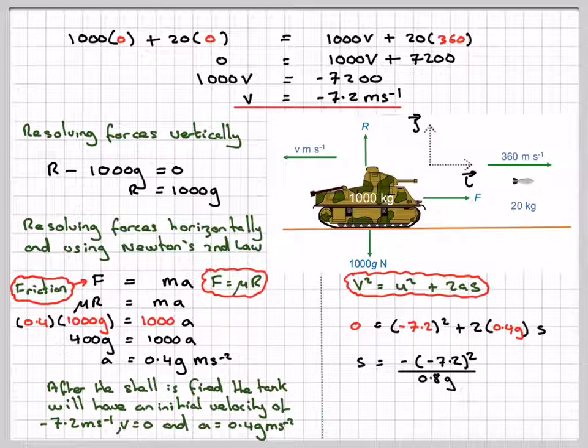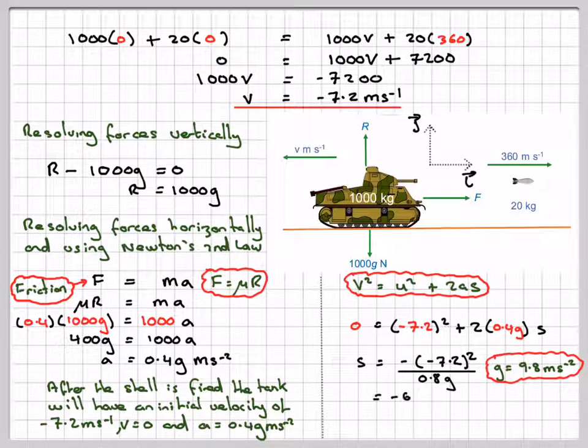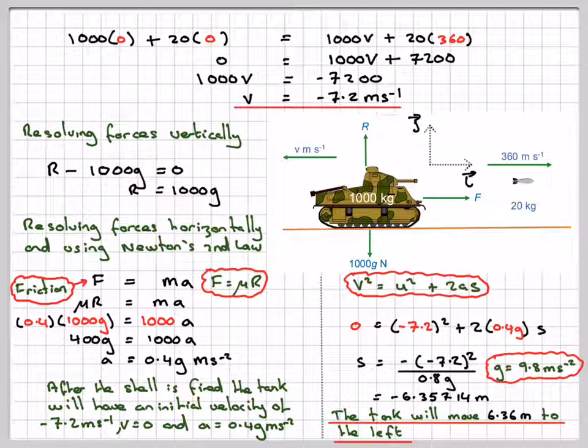2 times 0.4 is 0.8. G is 9.8 meters per second squared, so it gives me minus 6.35714 meters. The tank will move this way, minus left against the i, will move 6.36, rounded off to three significant figures, to the left. 6.36 meters.